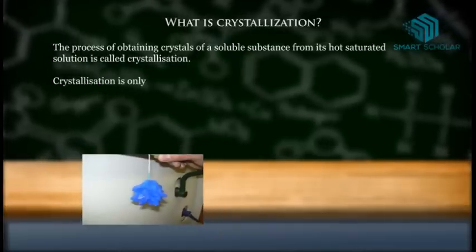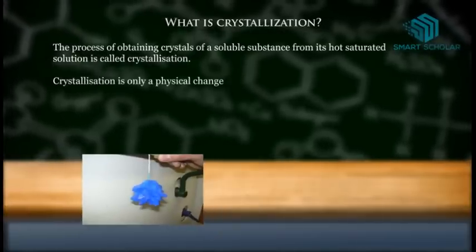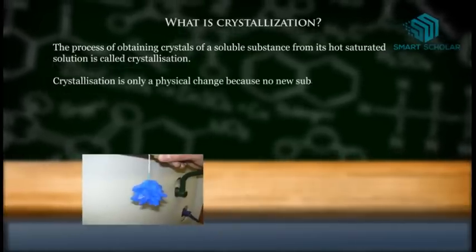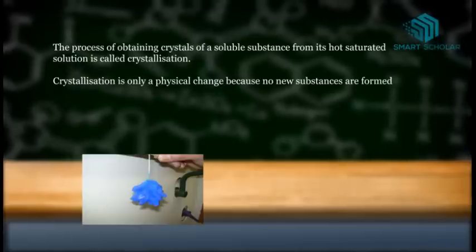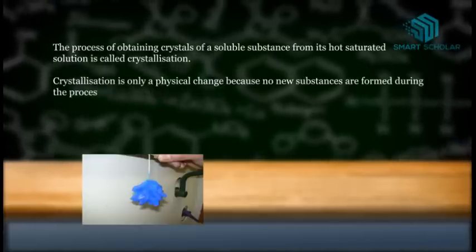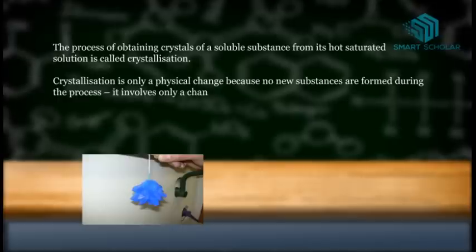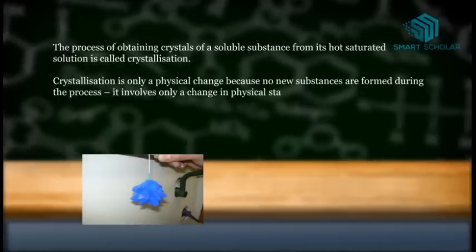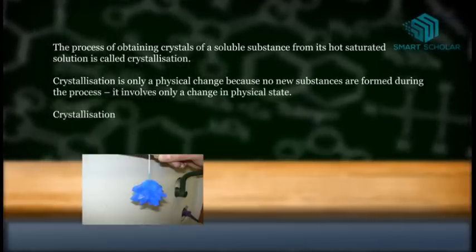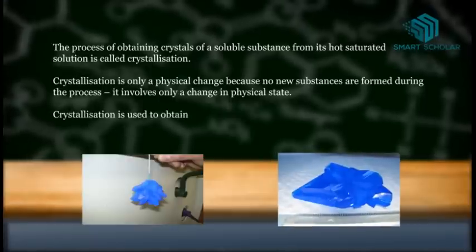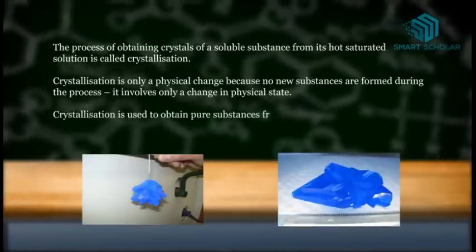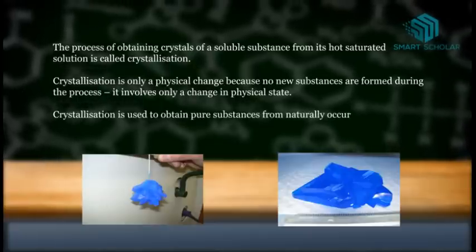Crystallization is only a physical change because no new substances are formed during the process. It involves only a change in physical state. Crystallization is used to obtain pure substances from naturally occurring impure substances.